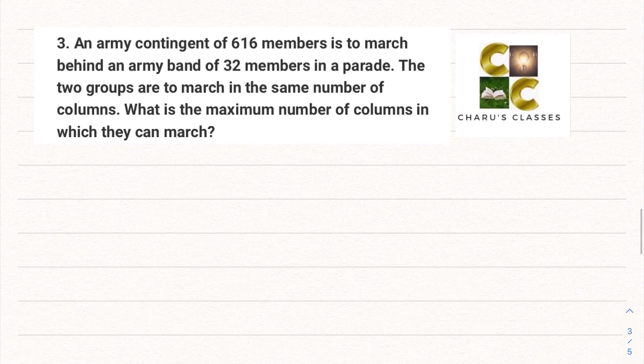So here they are talking about an army band, 32 members in a band. And behind them army contingent of 616 members have to walk, to march. Now the thing says that both groups should be made into same number of columns.